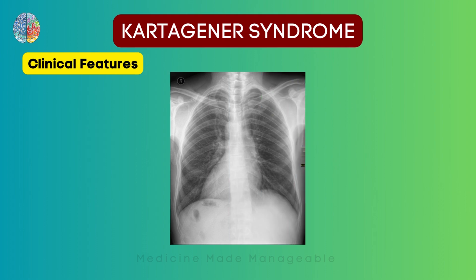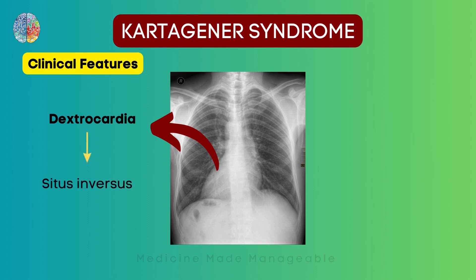Now coming towards the end of the video, Kartagener syndrome causes an interesting condition shown in this x-ray. Can you figure it out? This x-ray shows us dextrocardia, which means that the heart is located on the right side. This is one of the manifestations of situs inversus, in which the organs in your chest and even abdomen are reversed. So remembering dextrocardia for this condition is important.